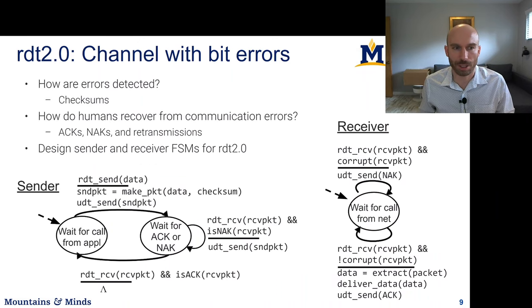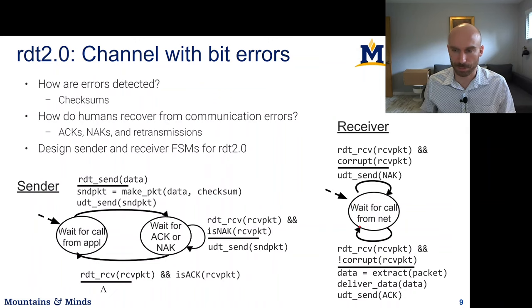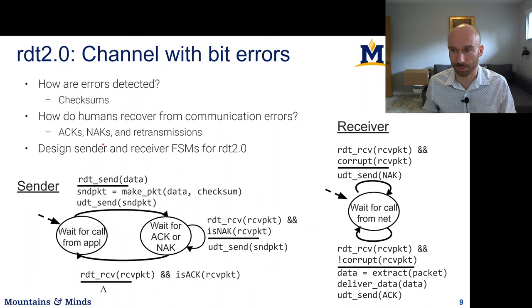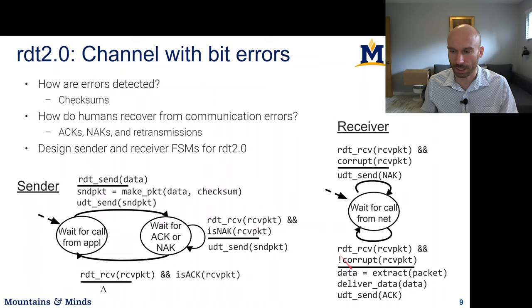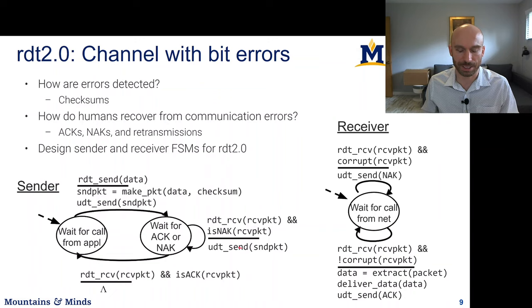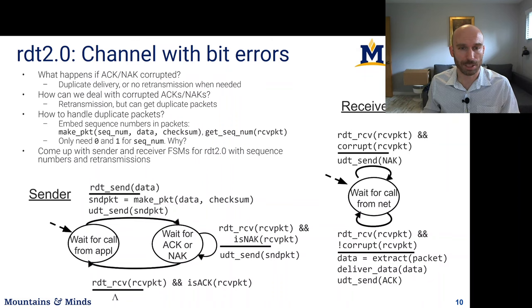We looked at different implementations of sender and receiver finite state machines depending on what can happen at the network layer. We had a situation where errors can happen on the communication channel, and to deal with that, the receiver would send acknowledgements or negative acknowledgements depending on whether the packet was corrupt, based on a checksum like the one we've seen in UDP. Based on the reply being an ACK or NAK, the sender would either resend the data or move on to transmitting the next packet.